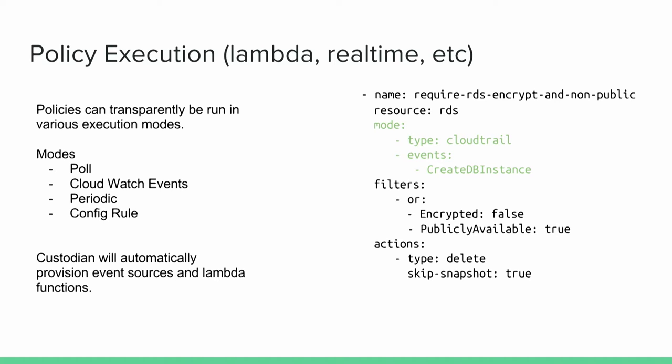We're at the Serverless Conference, so let's focus on our serverless capabilities. We'll provision ourselves into Lambda for any policy — it's basically just the addition of the mode section. We support four different execution modes. The default mode, running on the command line without specifying a mode, just pulls all resources and applies filters and actions. We can also provision into Lambda and hook up event sources. We support three event sources, plus additional capabilities for provisioning Lambda specifically to an action, like attaching a Lambda to an S3 bucket for encryption purposes. For example, a policy can be executed anytime someone tries to create a database to verify it's neither publicly available on the internet nor unencrypted, in which case we go ahead and delete it.